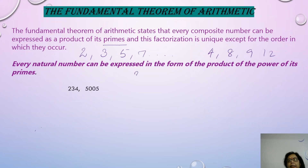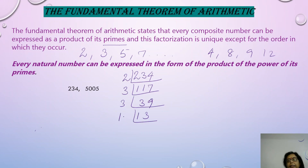So what does it state? Let us take two numbers before we go to the entire statement and talk about the uniqueness of the prime numbers. Let's take out the prime factors of 234. We get 2 × 3 × 3 × 13. So these are the prime factors of 234, and they are going to remain the same. Whenever you factorize 234, you will get these prime factors, and if you multiply these prime factors, you will always get 234. They are unique for 234.